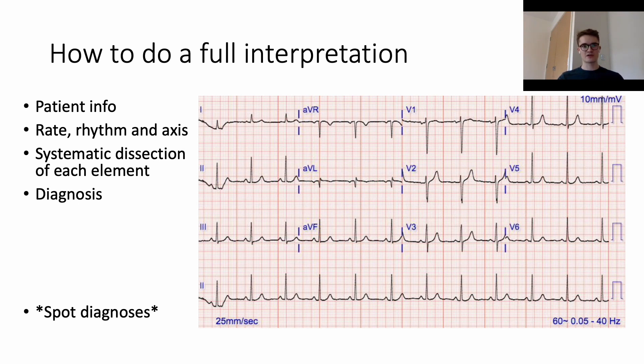Once we've done that, we're going to move on to a systematic dissection of each element of the ECG. We're going to use our understanding of the anatomy of the ECG trace and work through the P waves, the PR interval, the QRS complex, the ST interval, and the T waves.